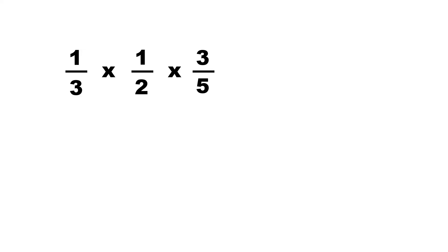So, here we have 1/3 times 1/2 times 3/5. And the only numbers we could cancel diagonally is 3 and 3. And if you reduce 3/3, it'll be 1. So, cross out both 3s, and put a 1.